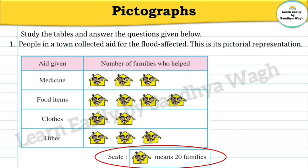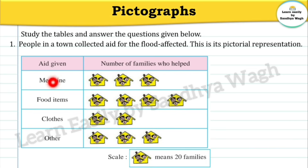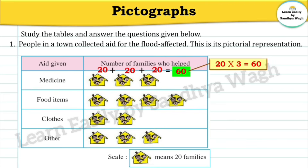One house means 20 families. How many families gave medicine? 20 plus 20 plus 20 equals 60. We can also do it another way: 20 appears 3 times, so 20 multiplied by 3 is equal to 60.